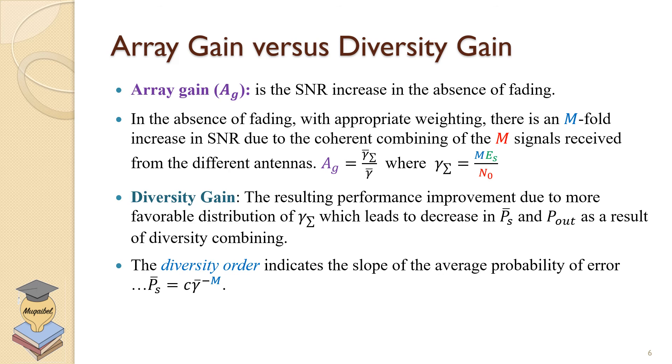Now the diversity order indicates the slope of the average probability of error improvement. As we increase the order, in many cases we can write the symbol error rate in something like this where c is a constant, and it's inversely related to m. As we increase m, the probability decreases dramatically. In the log scale this will look like a slope difference.